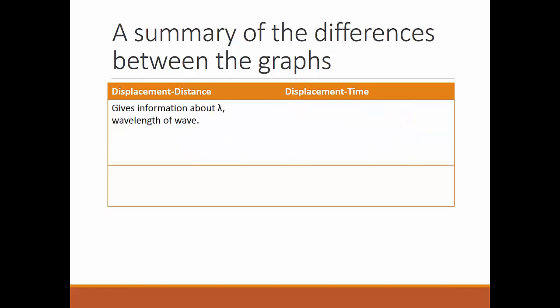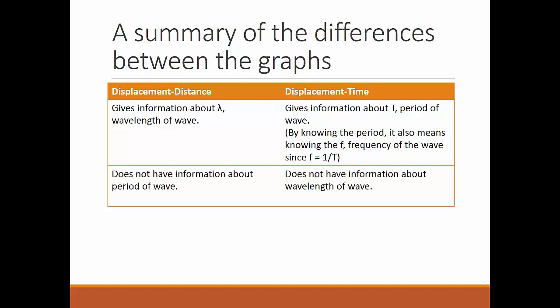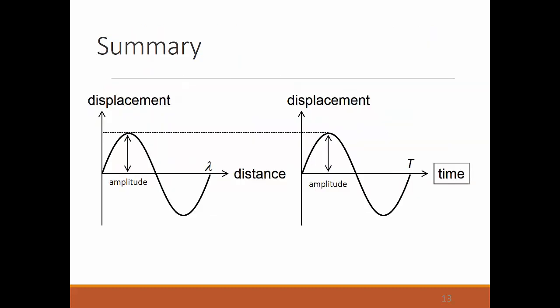Displacement-distance gives information about the wavelength of the wave. Displacement-time gives the period of the wave, and by knowing the period you also know the frequency. Each graph does not have information about the other's unique quantity. Both graphs always give the amplitude. But for displacement-distance you get wavelength, and for displacement-time the repeating pattern represents the period.